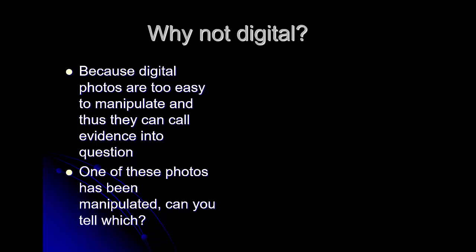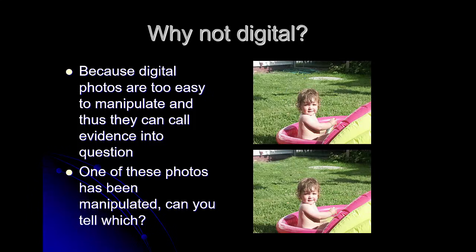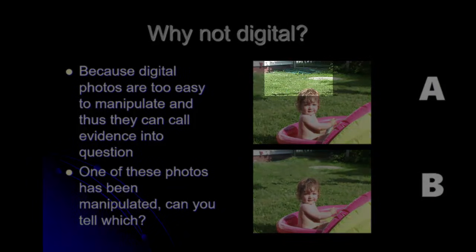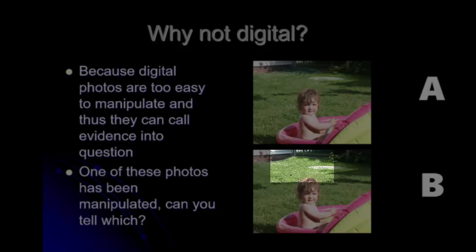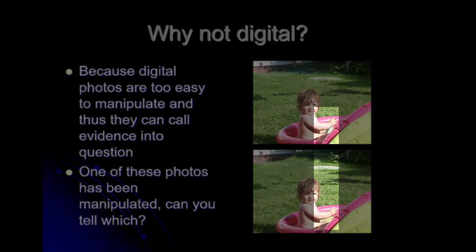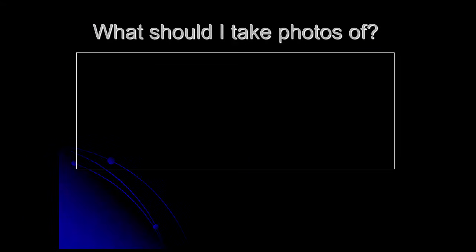I'm going to show you two pictures, and one of them has been manipulated — see if you can tell which one. We're going to call the top picture A and the bottom picture B. If you picked A, you would be correct. A was the original photo and B is the manipulated photo. You can see that the garden hose has been removed from the top of the photo, some grass has been added into that area, and a shampoo bottle the baby was holding has been removed. That was all done in about five minutes in Photoshop.